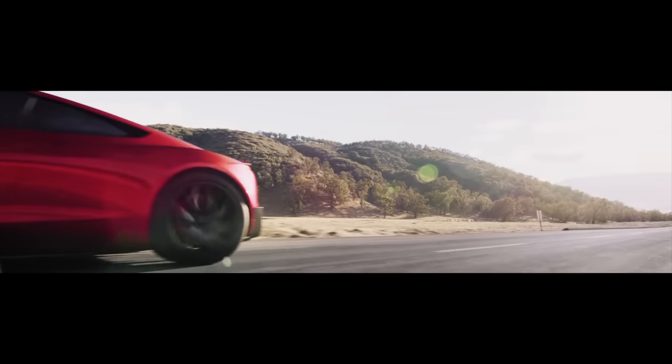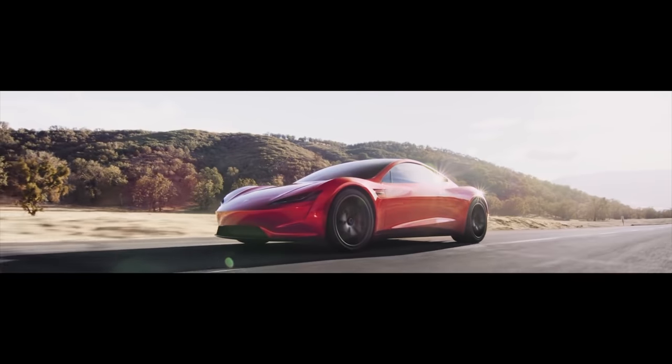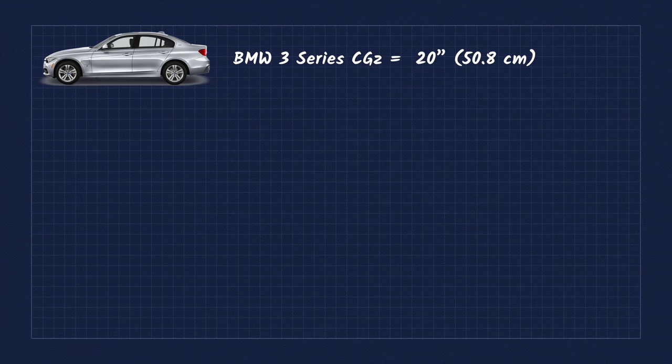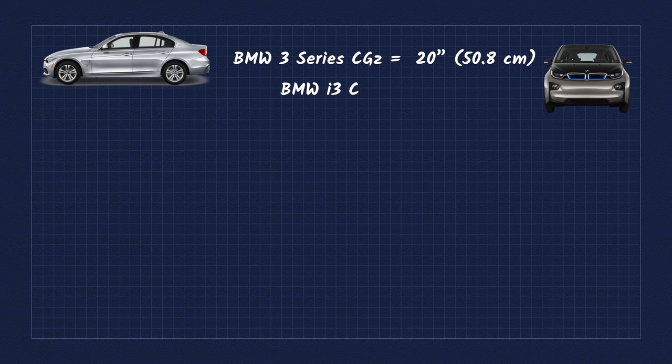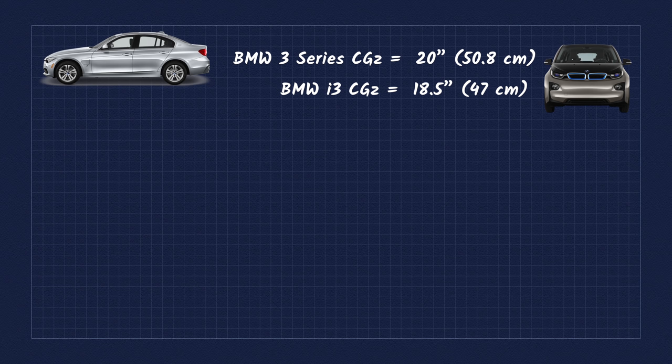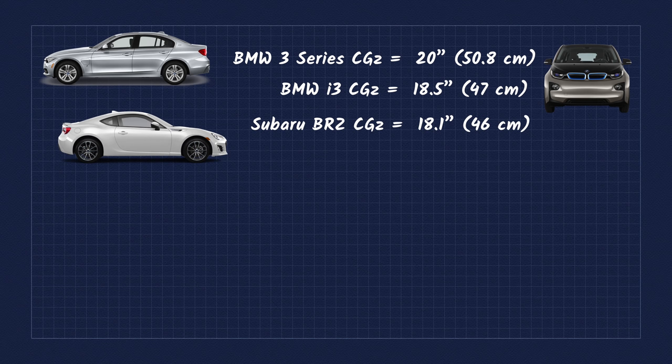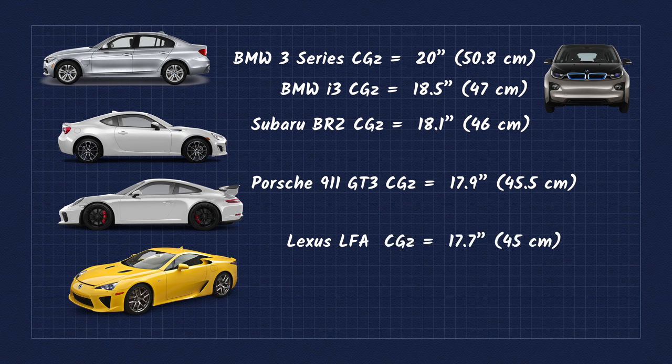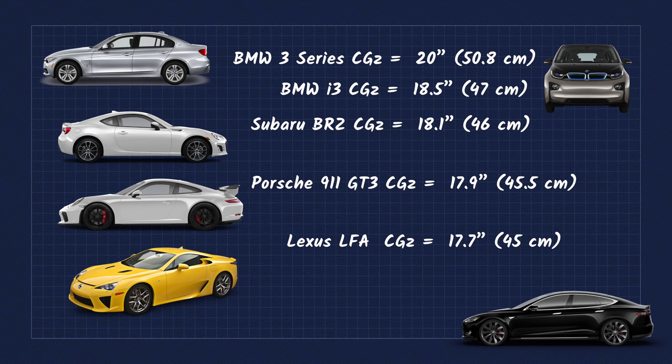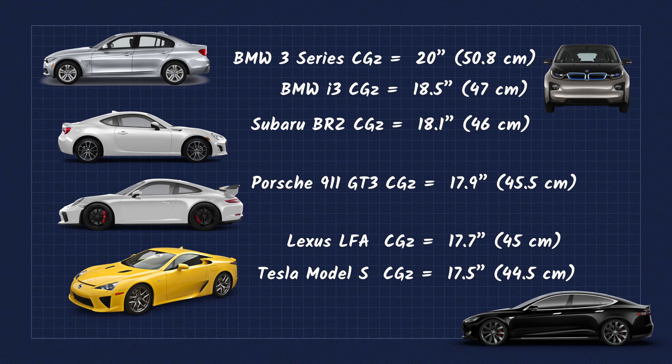Now that being said, let's look at some CGZ, or center of gravity in the vertical axis of different cars. The BMW 3 Series is one of the most popular sports sedans around the world, and has a center of gravity of 20 inches, but the electric BMW i3 beats it at 18.5. The Toyota 86, or Subaru BRZ, is praised for its low CG of 18.1 inches. Hyper cars are low CG champs. The Porsche 911 GT3 measures in at 17.9 inches, and the Lexus LFA at 17.7. But one car that beats them all is the all-electric Tesla Model S, measuring in at just 17.5 inches. The Tesla Model 3 will be quite similar and maybe even lower than the Model S.